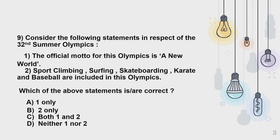Moving to Question 9, again from Sports Current Affairs: Consider the following statements in respect of the 32nd Summer Olympics. Statement 1 — The official motto for this Olympics is 'A New World.' Statement 2 — Sport Climbing, Surfing, Skateboarding, Karate, and Baseball are included in this Olympics. Statement 1 is incorrect — the Tokyo 2020 official games motto was 'United by Emotion'; 'A New World' was the official slogan for Rio Olympics 2016. Statement 2 is correct — the Tokyo Olympics had 339 events across 41 different sports, with 6 new sports: Baseball/Softball, Karate, Skateboarding, Sport Climbing, and Surfing. The correct option is Option B: 2 only.